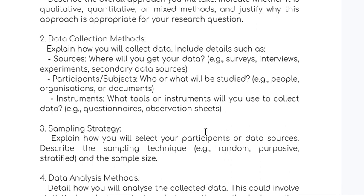Next are your data collection methods — the sources you use to gather your data. There are two types: primary data and secondary data. Primary data comes from sources like books, papers, and newspapers — the first-instance sources. If you don't find enough information from books or papers, you move on to secondary data.